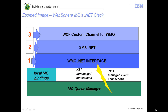As discussed in the previous slide, we have two types of connection modes. One is local bindings, where the client and the server exist on the same computer, and the communication happens via inter-process communications. And then we have client connections, where a communication channel will be established with the queue manager for sending and receiving messages.